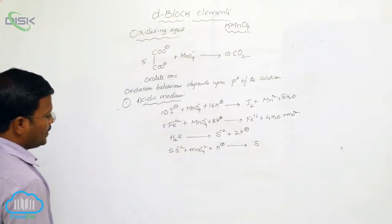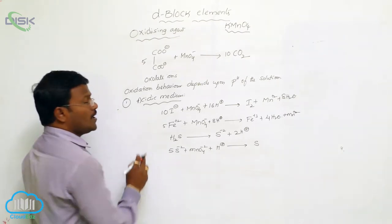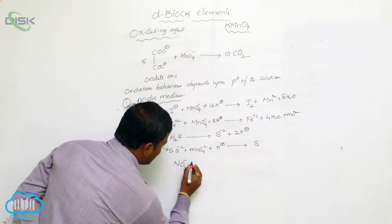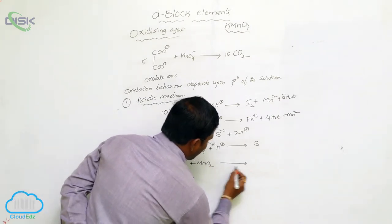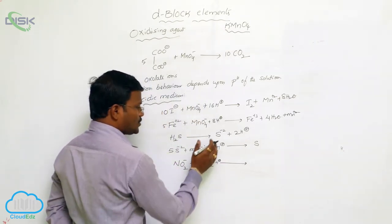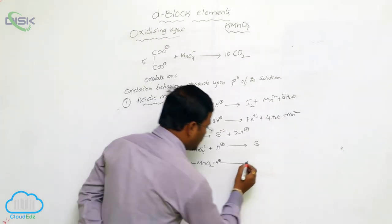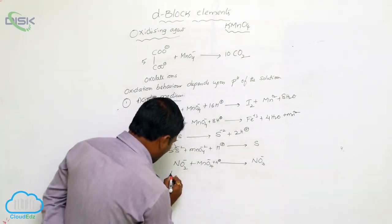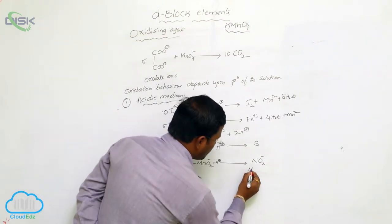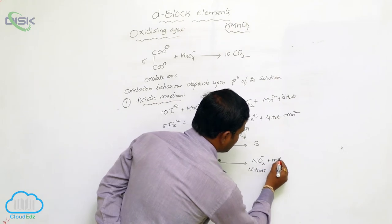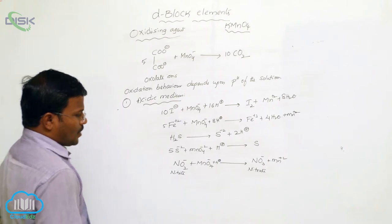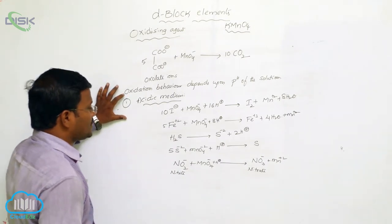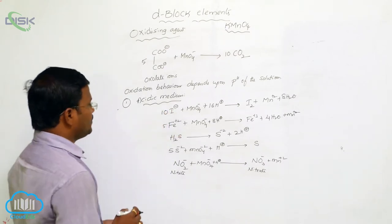Similarly, in acidic medium, potassium permanganate is also useful to oxidize nitrite ions: NO₂⁻ reacts with MnO4⁻ in the presence of H⁺ — the H⁺ indicates it is an acidic medium — to produce nitrate ions (NO₃⁻) with the formation of Mn²⁺. All these reactions come under oxidation reactions of potassium permanganate in acidic medium.